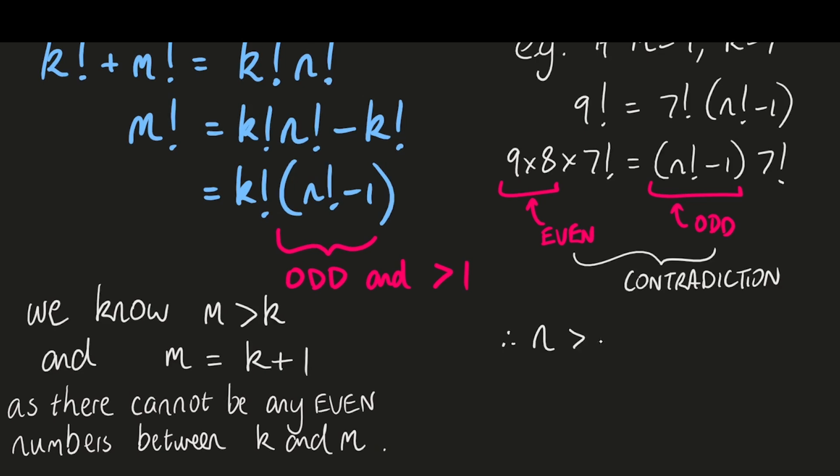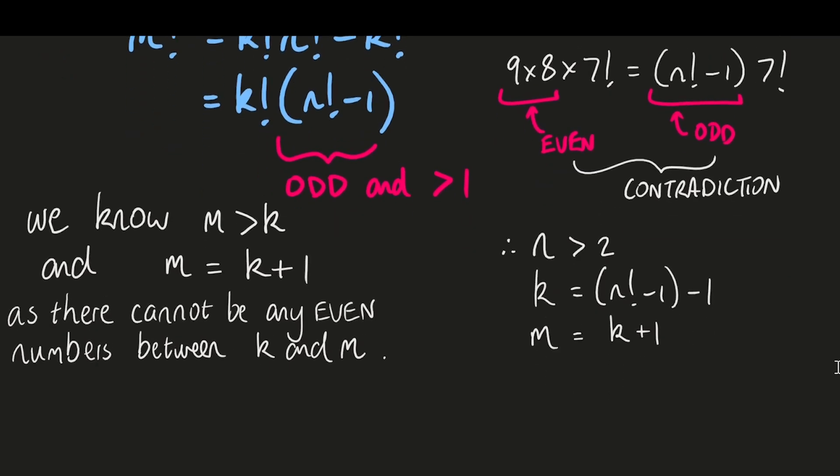But n can be anything, anything greater than 2. In that case, n factorial minus 1 is odd and we just set k to be the number that's 1 less than that. m then is 1 more than k and we'll get another infinite set of solutions.